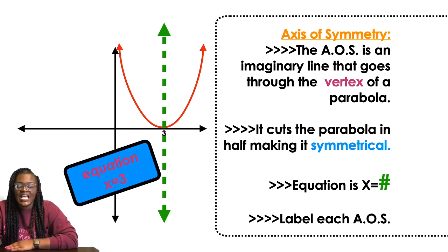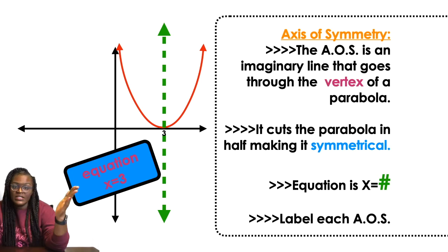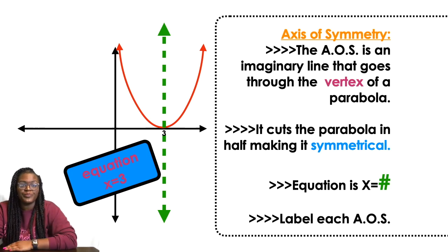If it was going through negative 2, I would say the equation is x equals negative 2. It's whatever it's going through. And notice that first number, the negative 3, matches the first number in the vertex.